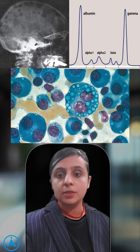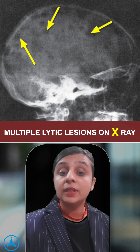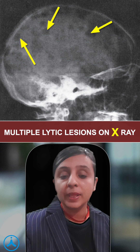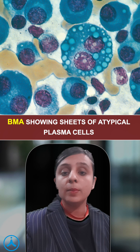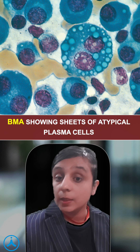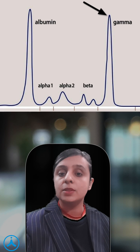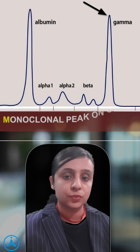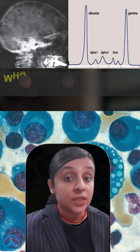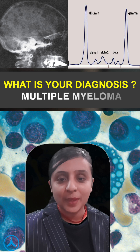So students, the presence of multiple lytic lesions on skull X-ray with complete replacement of the bone marrow with abnormal plasma cells, abnormal cytoplasmic immunoglobulin deposition, and presence of a monoclonal peak on serum immunoelectrophoresis — what is your diagnosis? Multiple myeloma.